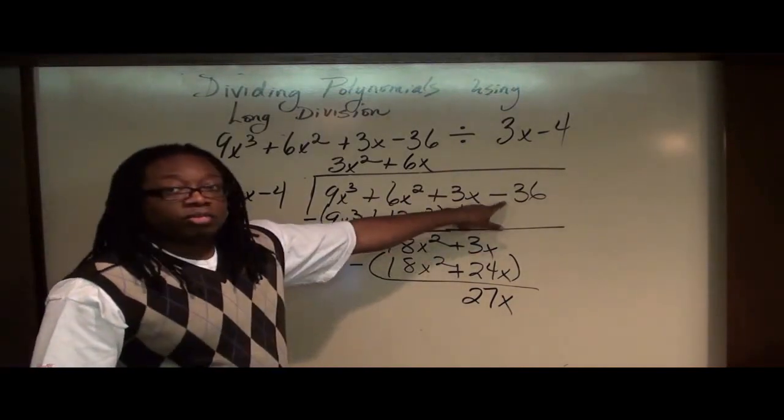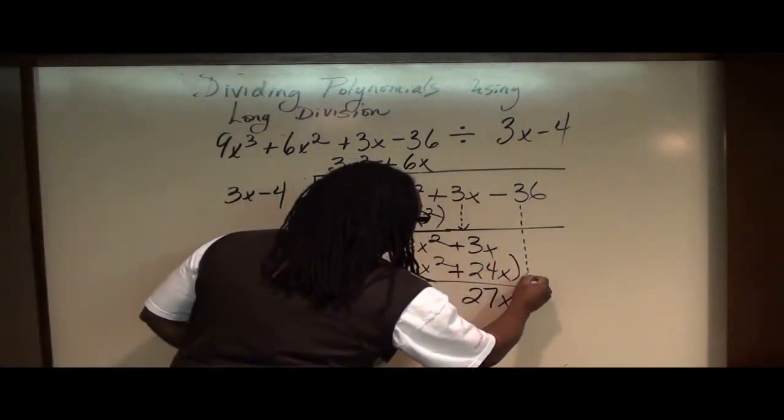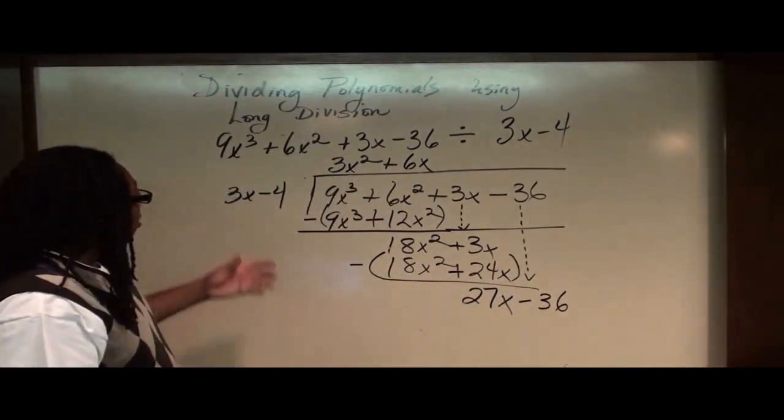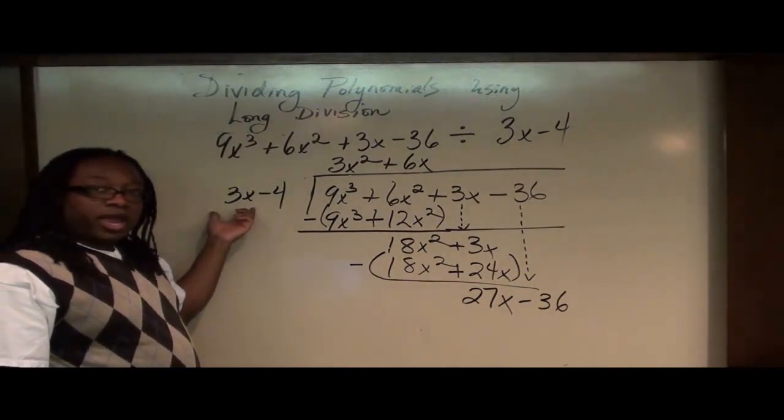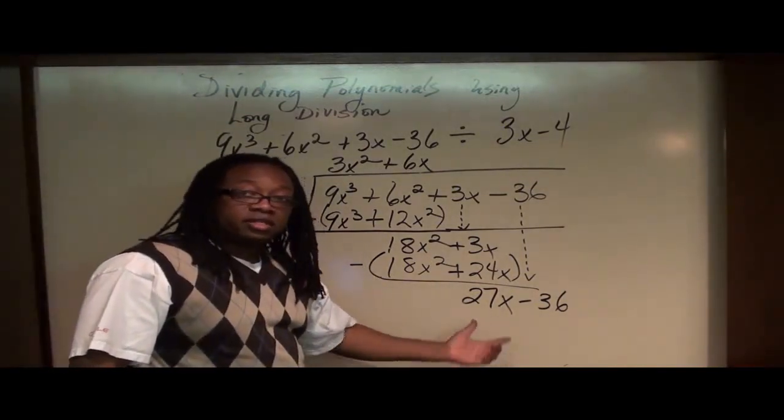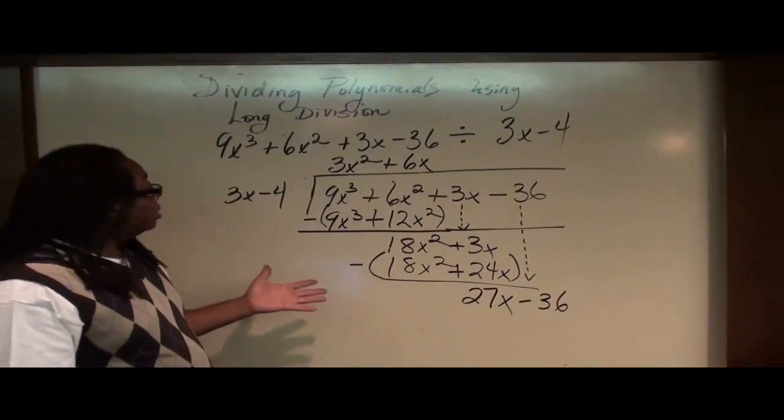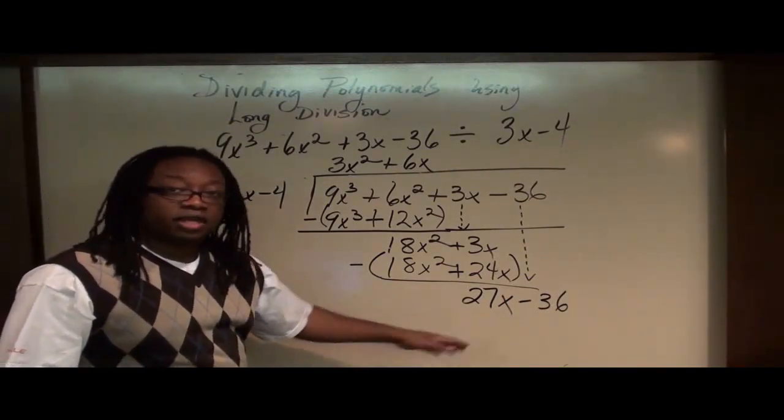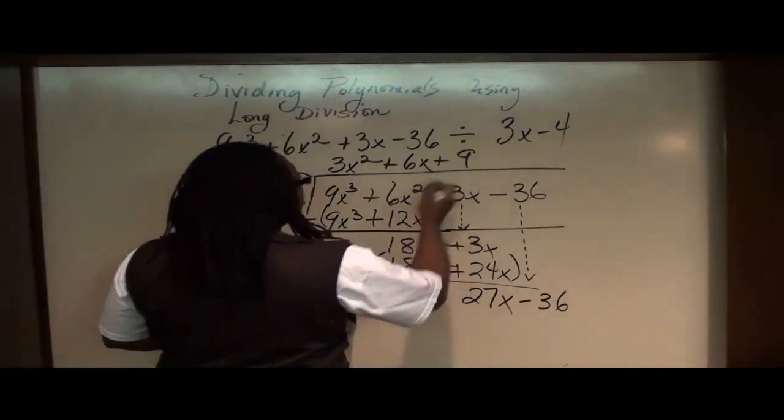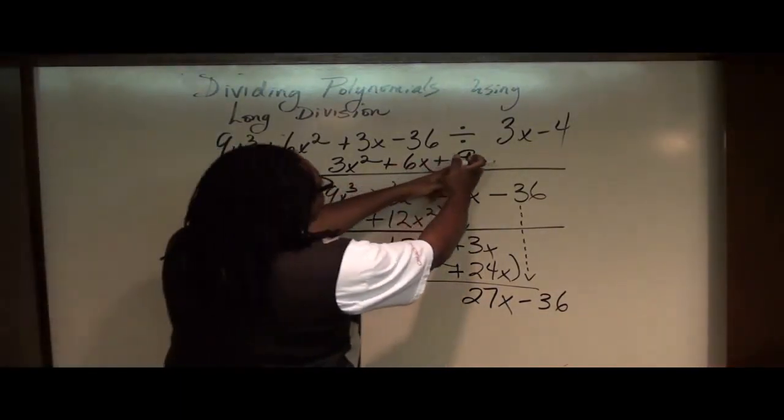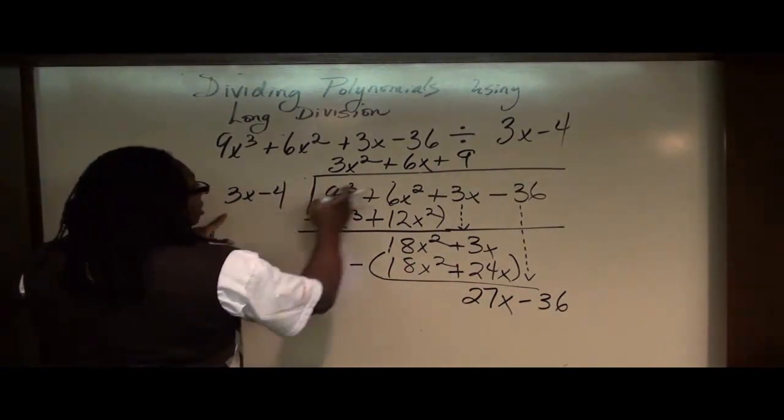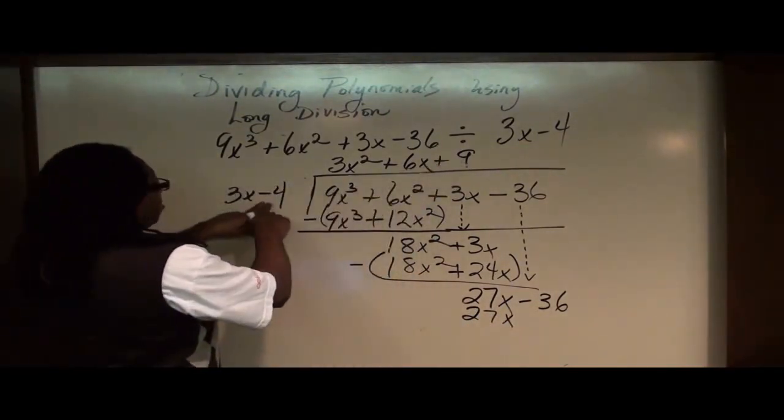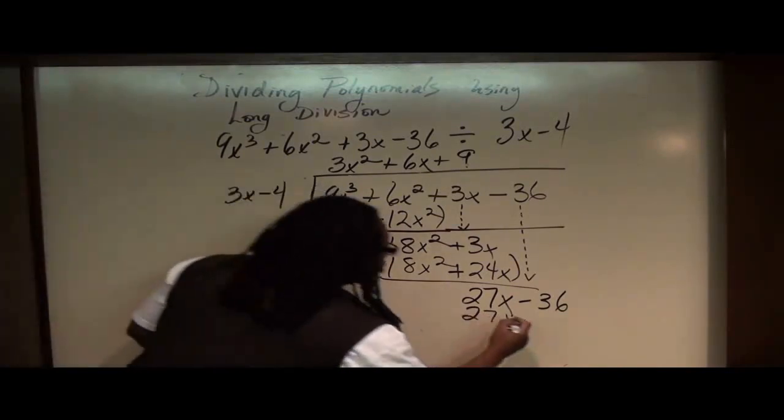And here we go again, we bring down the next number. This is our last number to bring down, which is minus 36. And then finally, what number can I multiply 3x with to give me 27x? Well, 3 times 9 is 27, and so if I multiply 3x times 9, I get 27x. So we have 9 here. I take the number 9 and multiply by everything here in the divisor. 9 times 3x gives me 27x. 9 times minus 4 gives us minus 36.